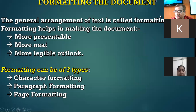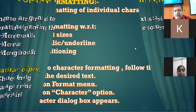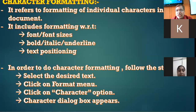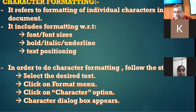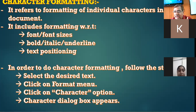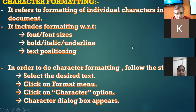The first type of formatting is character formatting. By the name it is clear — it is the formatting of individual characters in the document. Individual characters can be formatted to make them presentable. Character formatting includes font color, font size, font style, bold, italic, underline, and positioning of text, that is superscript and subscript. Let me open Open Office Writer to demonstrate.